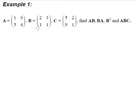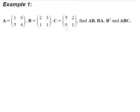Alright, now let's take a look at example 1. Matrix A is a 2 by 2 matrix: 1, 0, 5, 4. And matrix B is also a 2 by 2 matrix: 2, 3, 1, 1. We're supposed to find A multiplied by B, B multiplied by A, B squared, and A multiplied by B multiplied by C.